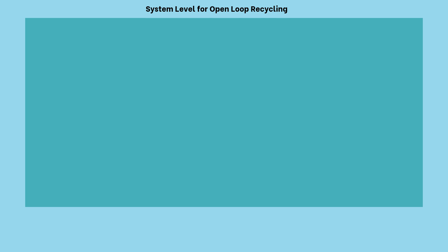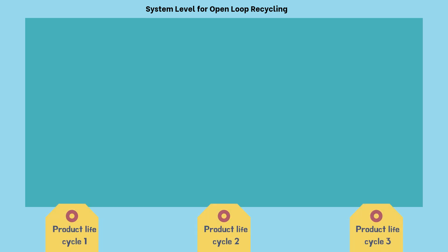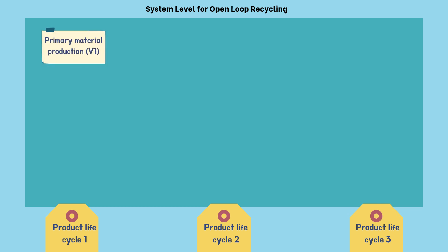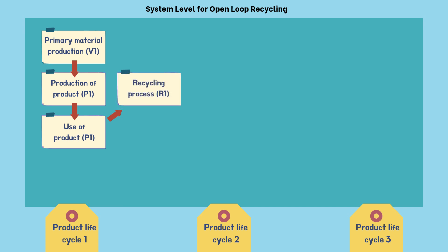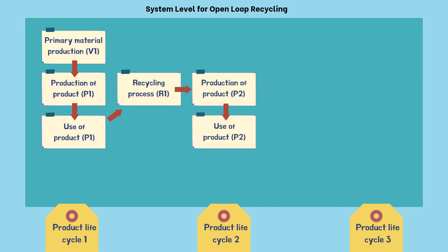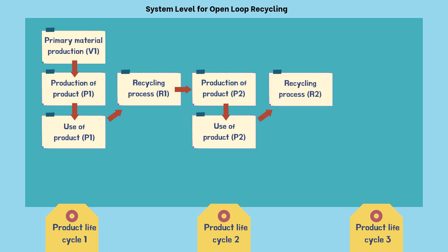Here is the example of the system level for open loop recycling, which consists of three product life cycles. For Product Life Cycle 1, it begins with primary material production V1, production of product P1, use of product P1, and then enters the first recycling process R1. For Product Life Cycle 2, the production of product P2 uses that product before it is recycled again in the second recycling process R2.